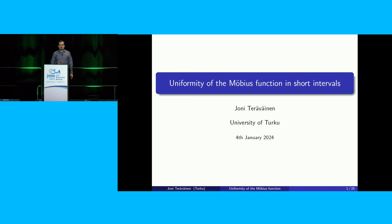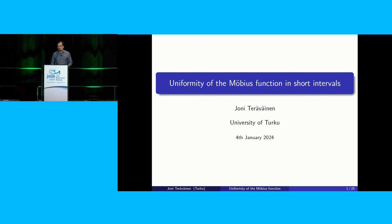I'll talk about the uniformity properties of the Möbius function, which is a topic we made progress on in our work at AIM, together with Kazuma Matamoku, Maxime Rajivy, Terry Tao, and Tamara Ziegler. Towards the end of the talk, I'll also mention some very recent developments on this topic after our work.